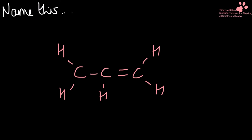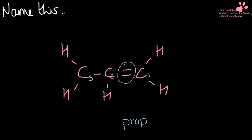Name this. Now, this is slightly more complicated to name because we have our functional group here. We need to have our numbers — lowest first — so we need to start numbering one, two, three so that our functional group is on carbon number one. So it is prop-1-ene.